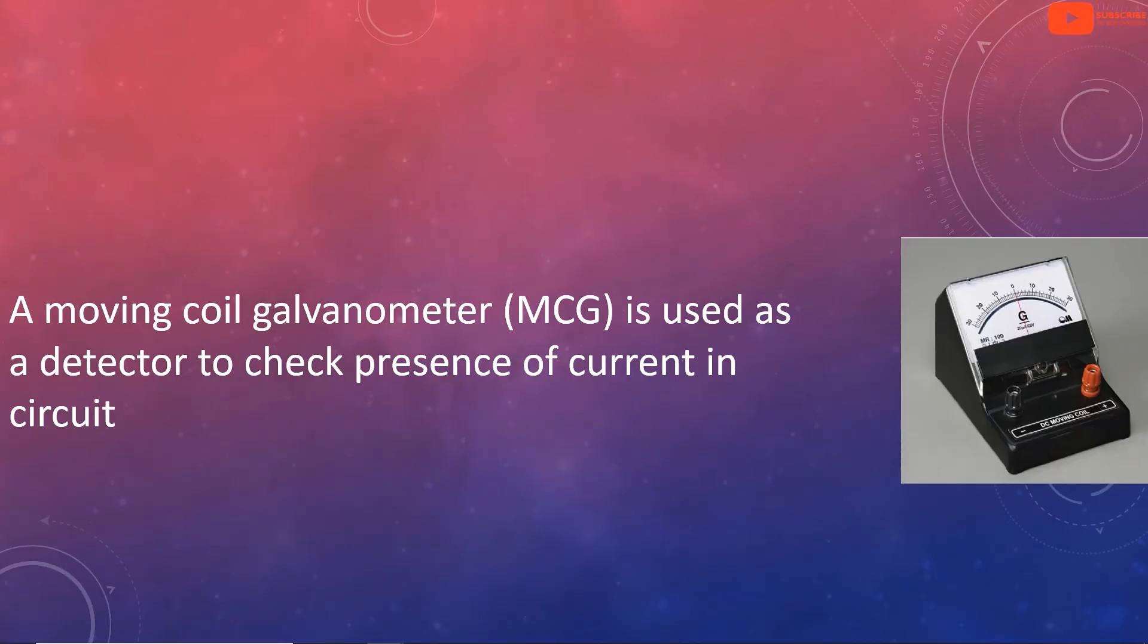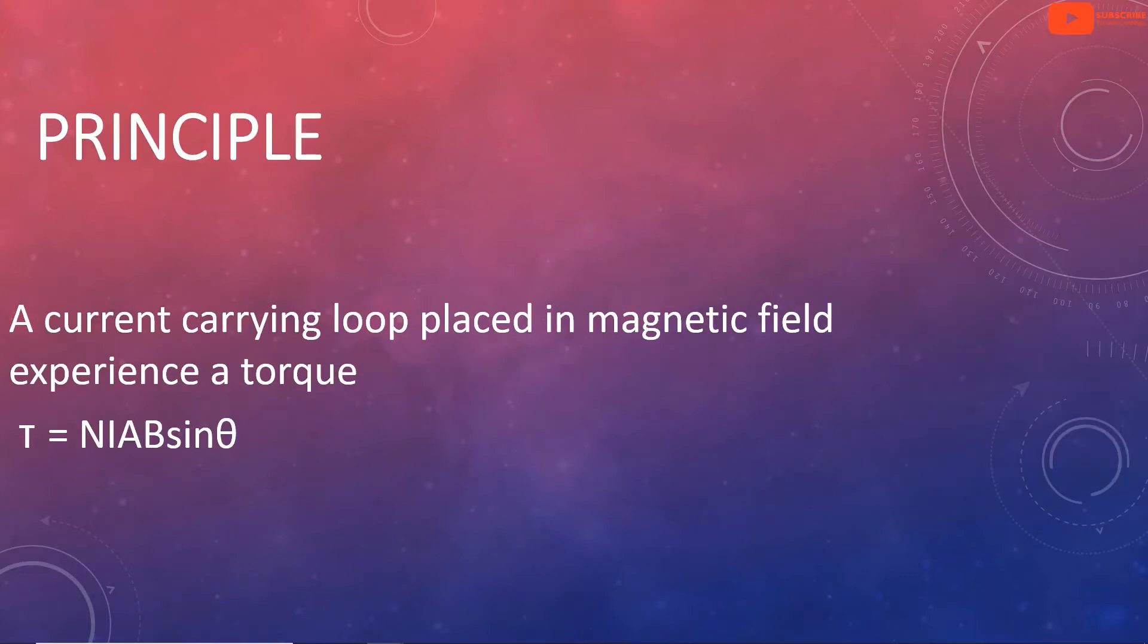In the circuit, we are going to use a current detector. The moving coil galvanometer is used as a detector to check the presence of current in the circuit. We are going to use a sensitive device as a moving coil galvanometer.